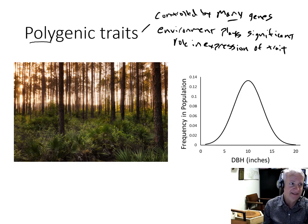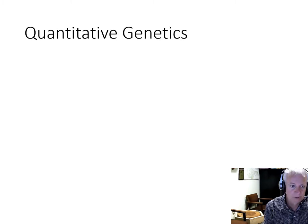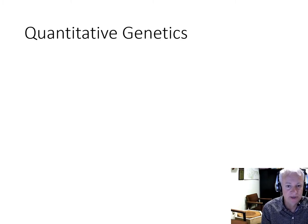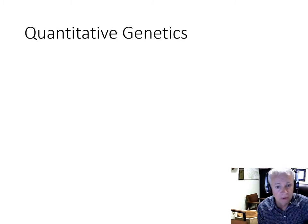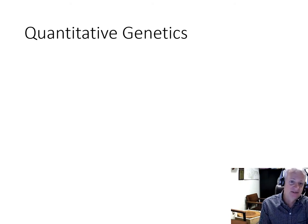The most important tool in modern tree breeding is quantitative genetics, which is a set of statistical tools used to separate genetic and environmental effects.